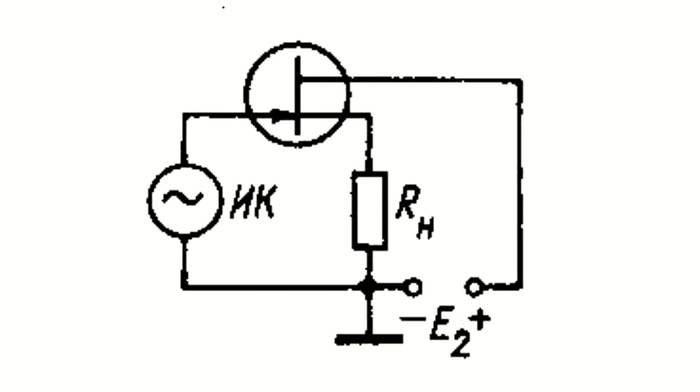If this voltage is too high, it is reduced by applying an additional positive voltage to the gate from, for instance, a voltage divider.